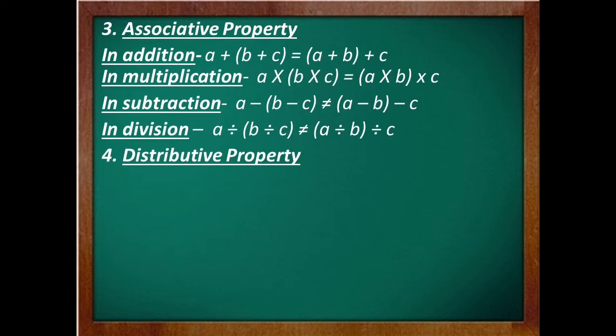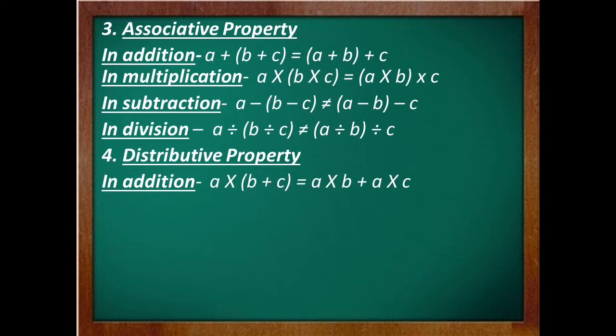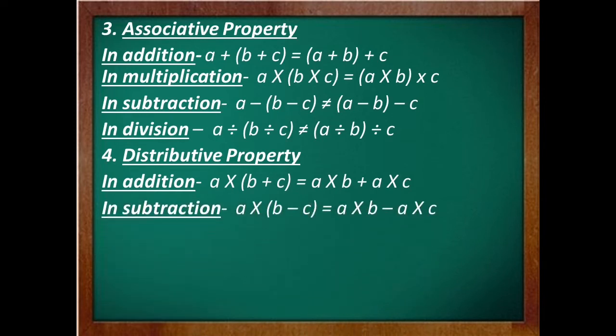The next property is distributive property. It says that when two numbers have been added or subtracted and then multiplied by a factor, the result will be the same as when each number is multiplied by the factor and the products are then added or subtracted. Hopefully, this is also clear to you.